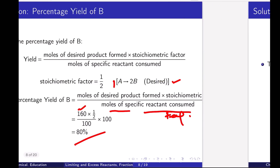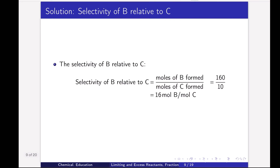Next is the selectivity of B relative to C. Selectivity is moles of desired product divided by moles of undesired product. Moles of B formed is 160, moles of C (undesired product) formed is 10. So selectivity = 160/10 = 16 mole B per mole C.